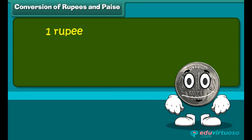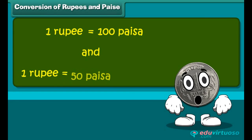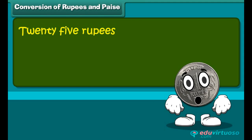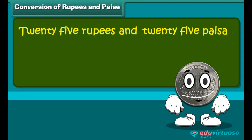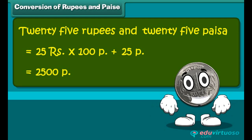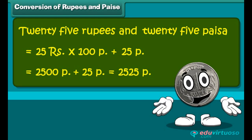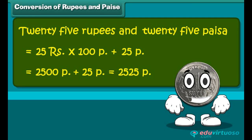One rupee is equal to 100 paisa. So 25 rupees and 25 paisa is equal to 25 multiplied by 100 plus 25 paisa. This becomes 2500 plus 25 paisa, which equals 2525 paisa. Amazing — so much money!